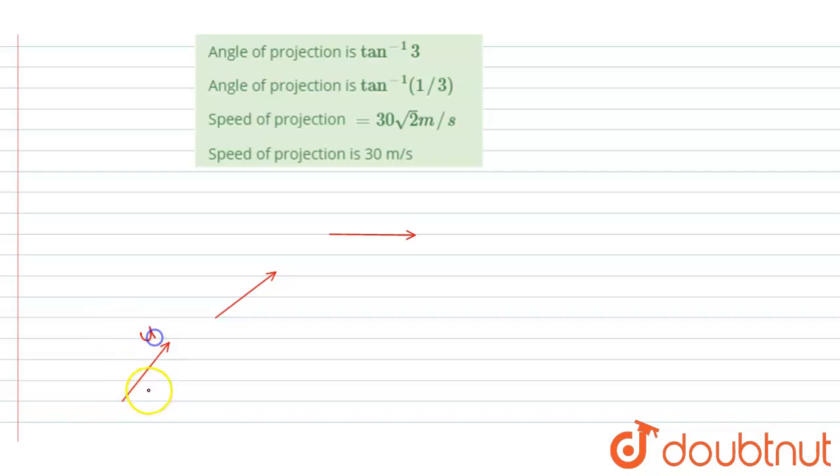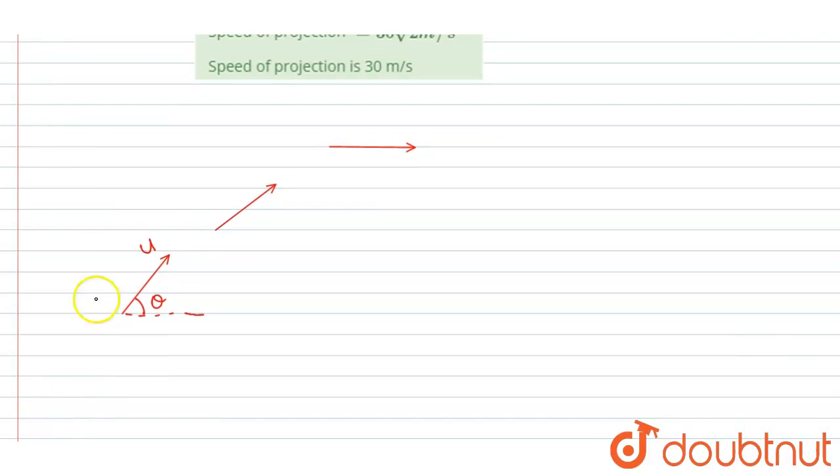So let's say this is u and this angle is theta. So here if you see the two components, if I write them down it will be u cos theta and u sin theta.